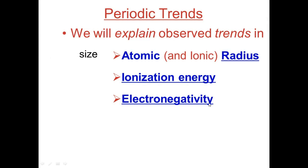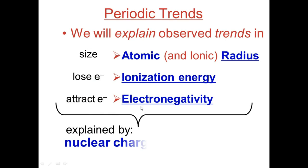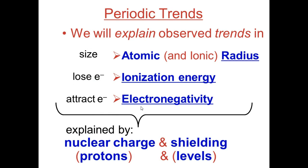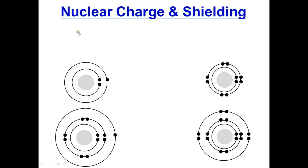Atomic radius is the size of an atom, ionization energy is the energy needed to remove an electron, and electronegativity is an atom's attraction to electrons. We're going to be explaining them in terms of nuclear charge — the protons — and shielding.